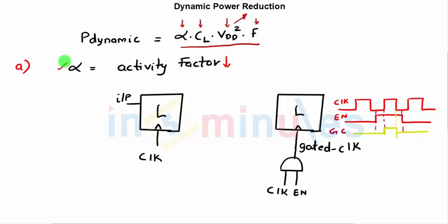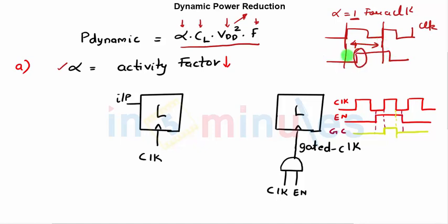Now let's start with switching activity factor alpha. Switching activity factor alpha is equal to 1 for a clock. Why? Because in one cycle, my clock rise and fall both take place in one cycle, so alpha is highest for a clock. Most of the data inputs will switch only once in this cycle, so they would have a switching activity factor of 0.5.